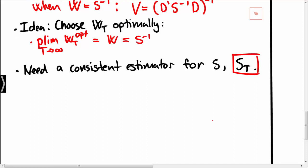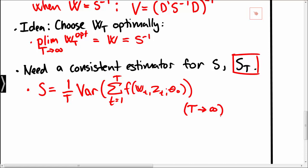Recall that S is the asymptotic covariance matrix of the sample moments. We may write S as 1 over T times the variance of the sum of the functions F. We should think about this quantity in the sense that we let T tend to infinity.